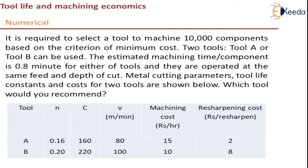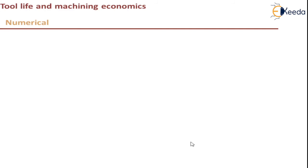We need to find out which tool results in lower overall cost and recommend that one. For that, we first calculate the machining cost. The total machining cost is a summation of labor cost and resharpening cost. Let us first calculate the total machining time.